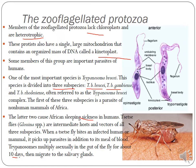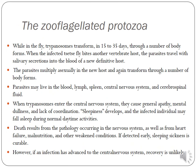The parasite undergoes asexual reproduction in the gut of the tsetse fly and then migrates to the salivary gland. After about 10 days in the gut, it moves toward the salivary gland. While in the fly, Trypanosoma transforms over 15 to 35 days through a number of body forms.